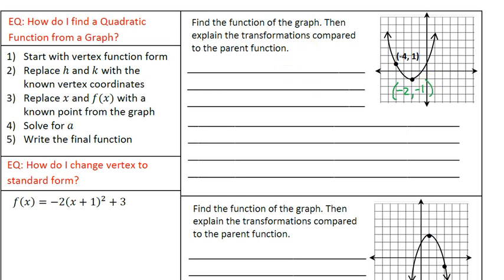Let's make a couple of notes. Our known point is going to be labeled x and y. We're also going to label h and k — the vertex is found at the h value and the k value. Always identify the vertex, label the x-coordinate as h and the y-coordinate as k, then find your known point and label that as x and y.